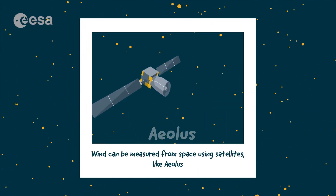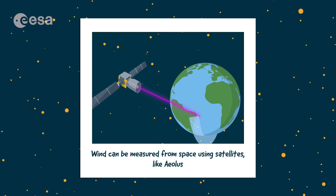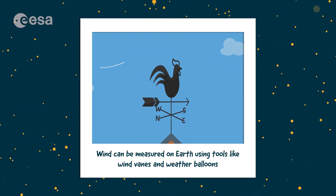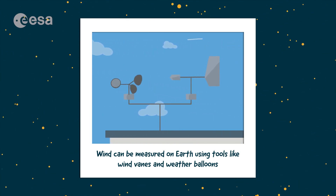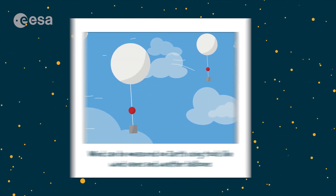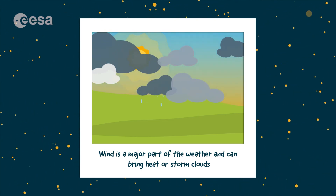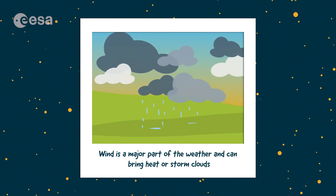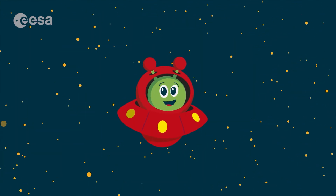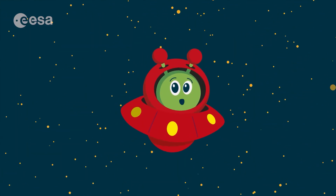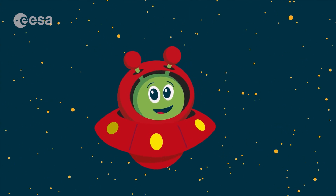Wind can be measured from space using satellites, like Aeolus. Wind can be measured on Earth using tools like wind vanes and weather balloons. Wind is a major part of the weather and can bring heat or storm clouds. See you soon to show you more incredible things about your planet and the Universe!